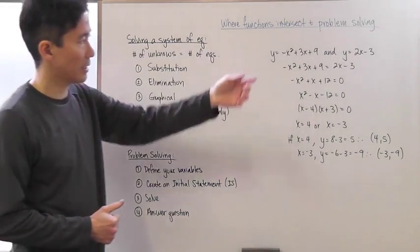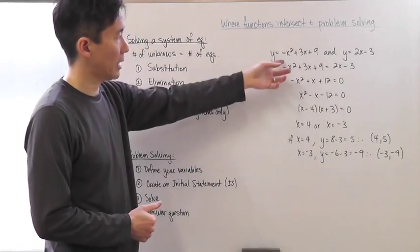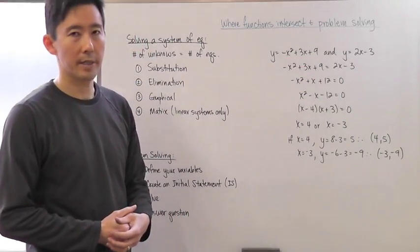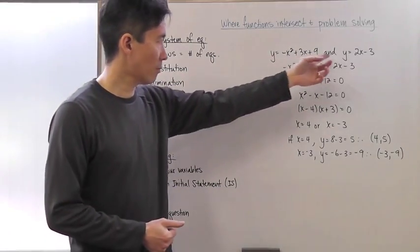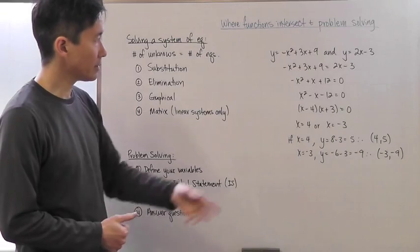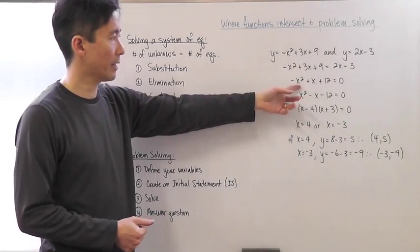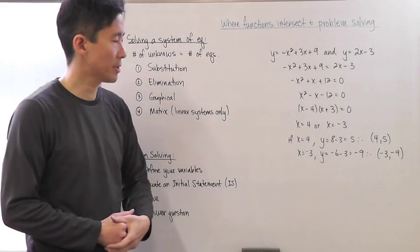Let's look at an example. We have y = -x² + 3x + 9 and y = 2x - 3. Using the substitution method, we set the equations equal to each other. Setting this equal to 0, we get -x² + x + 12 = 0.